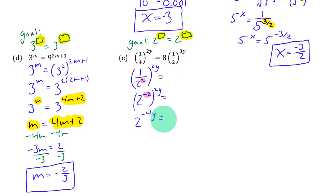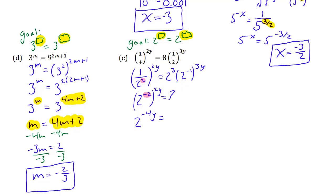Now on the other side, I want to write everything as a power of 2. The 8 is 2 to the power 3. The 1 over 2 is 2 to the power negative 1, and there's still that 3y there. So you can combine the negative 1 and the 3y because you have a power to a power: that gives 2 to the power negative 3y. And since 2 to a power times 2 to a power means you add the exponents, that's going to be 2 to the 3 minus 3y.